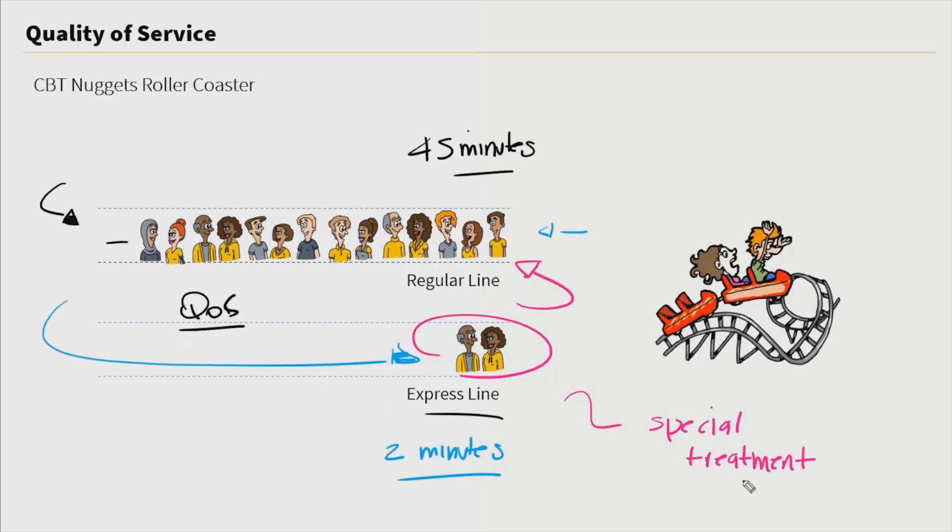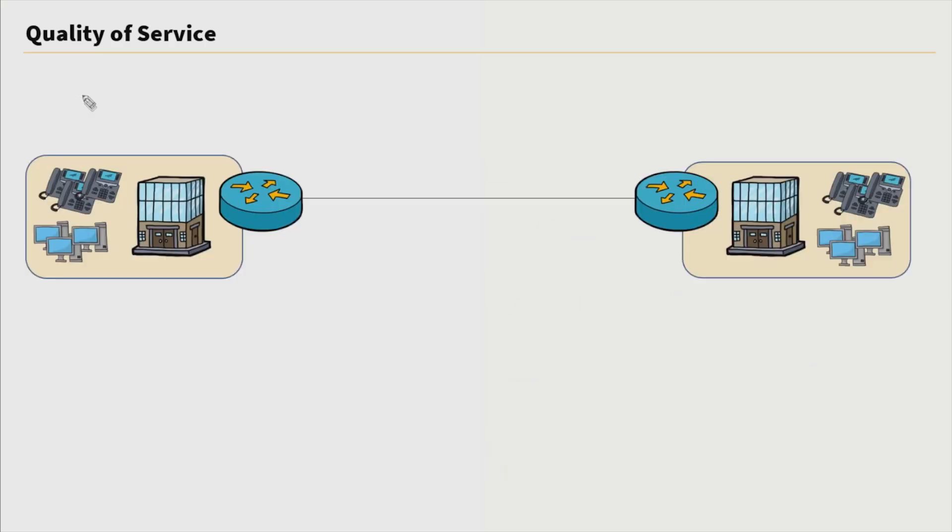So the takeaway here, we're giving the express line special treatment than folks who are sitting in that regular line. The special treatment allows these folks to get on that ride first without having to wait in this long line. So this is very similar to how quality of service works. We're giving certain traffic on our network special treatment over other traffic.